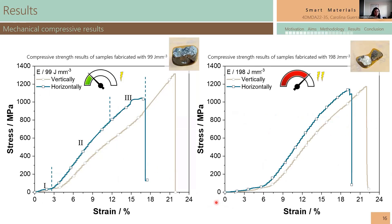I then performed compressive strength tests. As you see here, for samples constructed with lower and higher volumetric energy, in vertical and horizontal orientations — vertical samples showed better elongation and higher maximum strength compared to horizontal samples. The curve is divided into three stages: the first is the detwinning of the martensite, then the elastic deformation region, and around 800 MPa the plastic deformation begins. The fracture occurs at 45 degrees, indicating the material is very brittle.